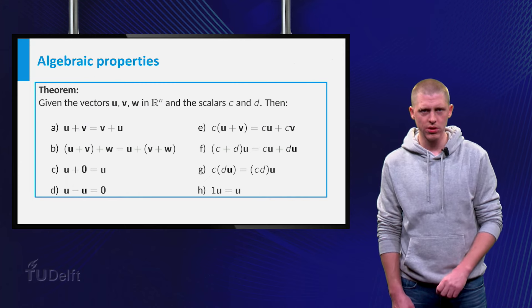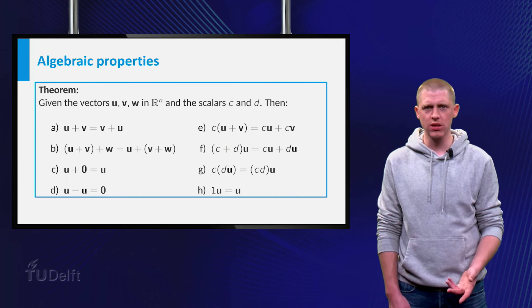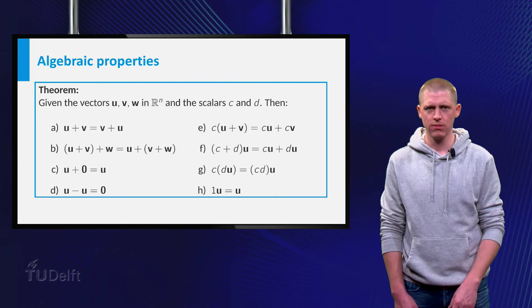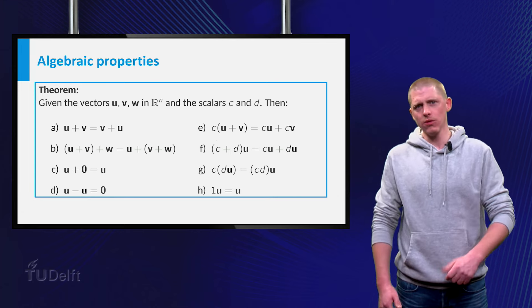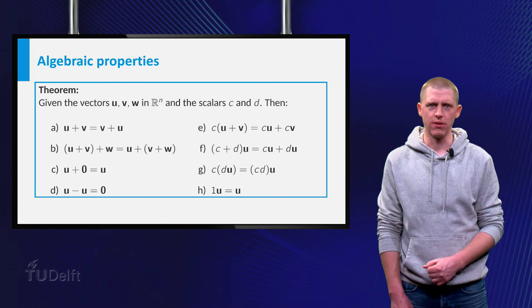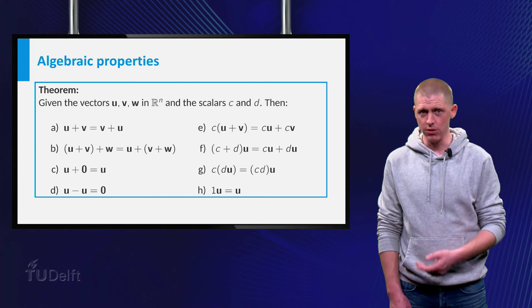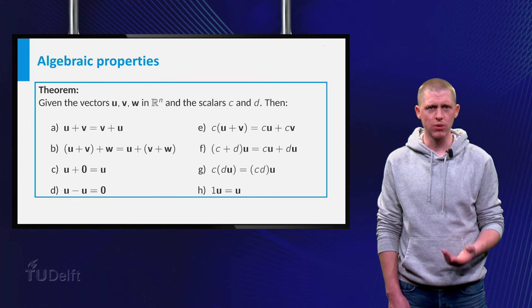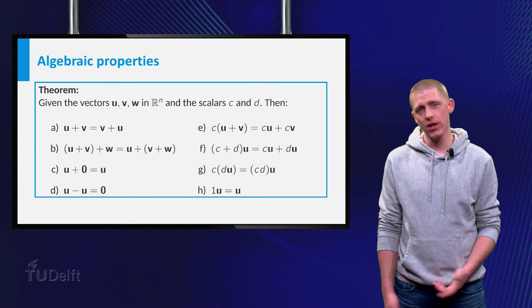In one of your calculus courses, you may have seen this list of eight properties. Turns out, they are also valid in Rn, so you are allowed to use these properties in calculations with vectors in Rn. Isn't that convenient?